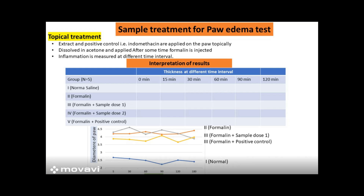In the case of topical application, for the normal group the inflammation is around 0, and for other groups we calculate as per the formula. We can measure the thickness or diameter of the paw at different time intervals and plot this against time. From the graph, we can compare the paw thickness in the control group, sample group, and normal group.